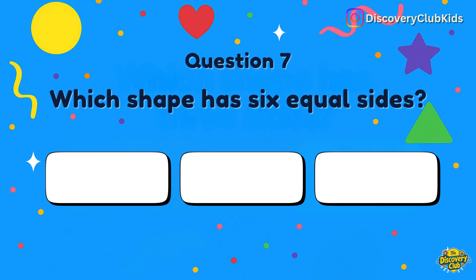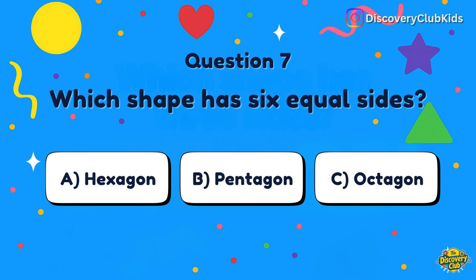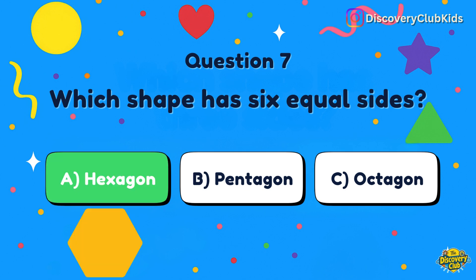Question number 7: Which shape has six equal sides? The correct answer is hexagon.